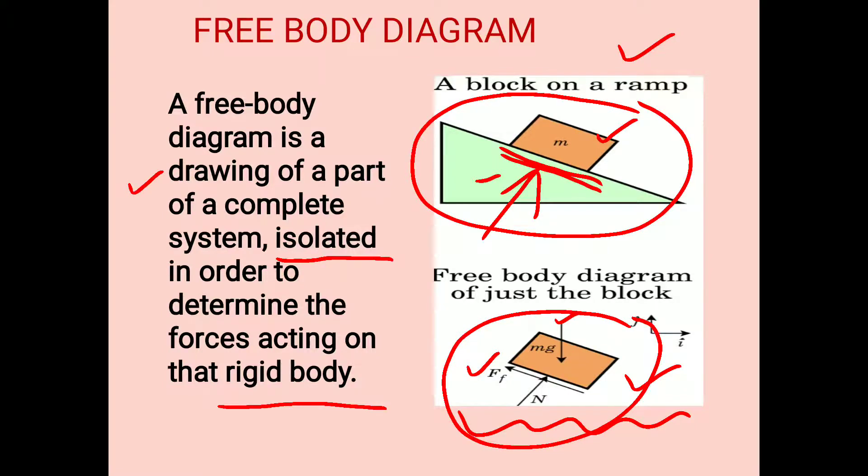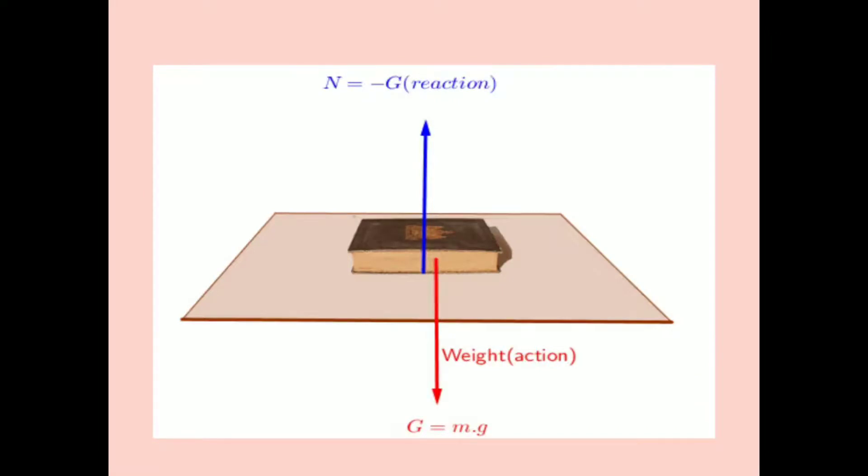For any system of forces, we can draw the free body diagram. Another example: a book is lying on a table. The free body diagram shows the weight acting downward and the normal reaction force N from the table acting upward on the book. There are different cases where we can simplify and draw a free body diagram.